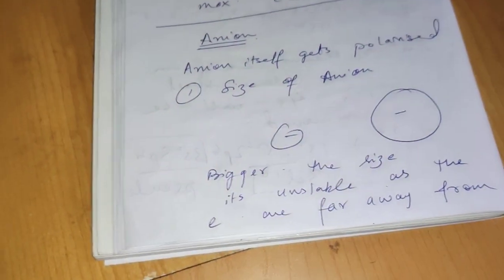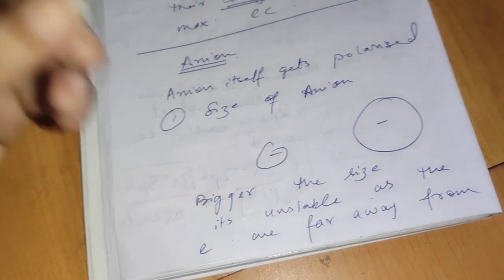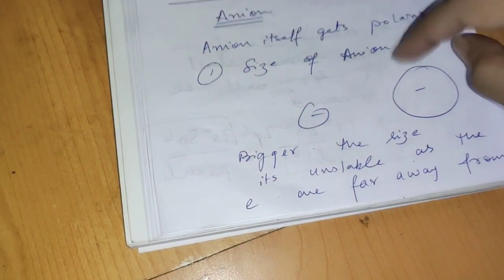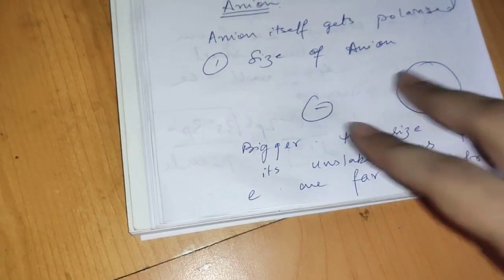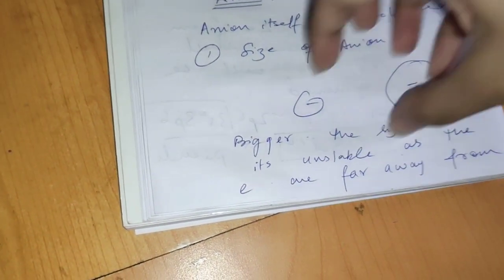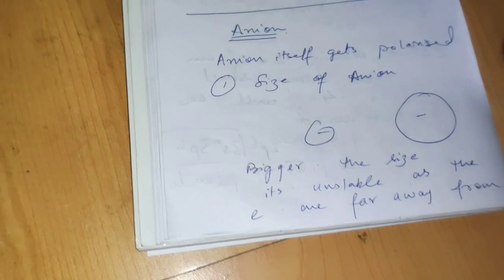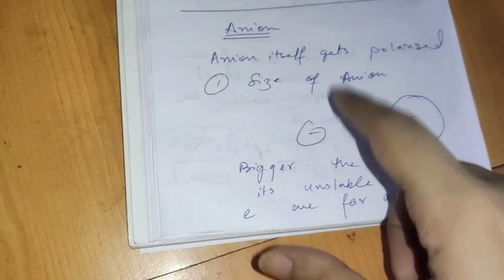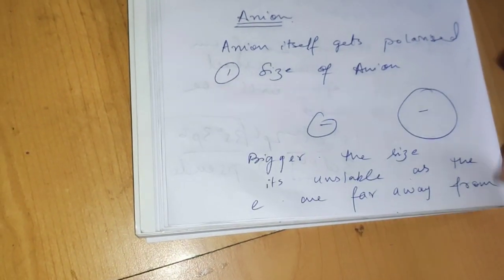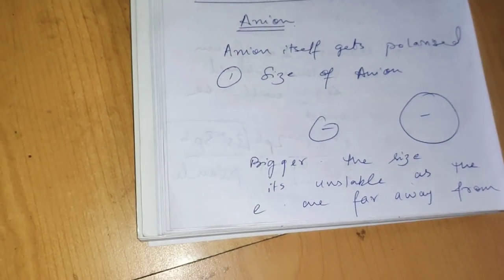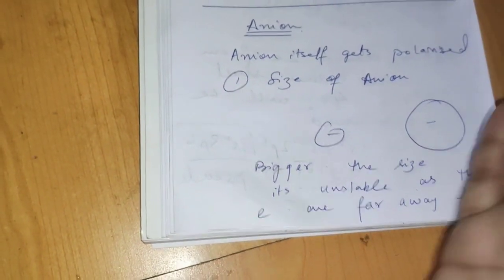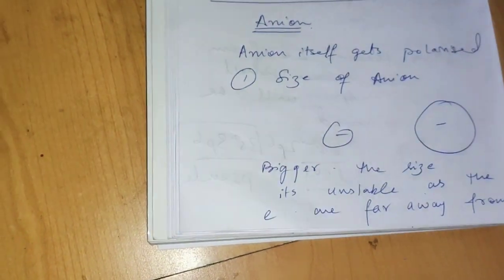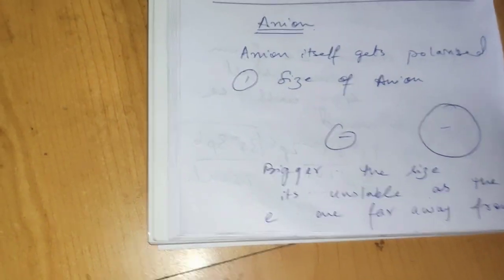For an anion, the bigger the size, the more unstable it would be. If the size is bigger, the electrons are scattered everywhere, so it becomes easier for the cation to attract the electron cloud towards itself. If the size is smaller, the electrons are more concentrated at the center, making it difficult for the cation to pull them out. When the size is bigger, the electrons are scattered and easily get attracted and deformed, as they are very far away from the center of the nucleus.